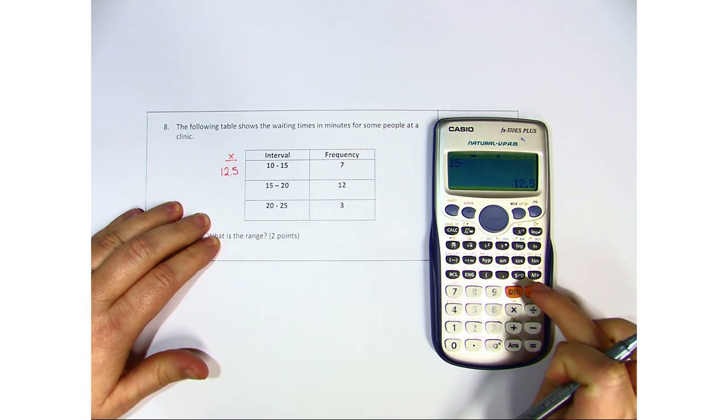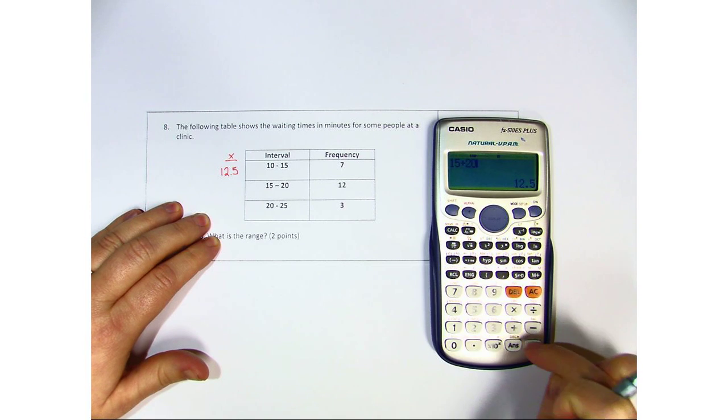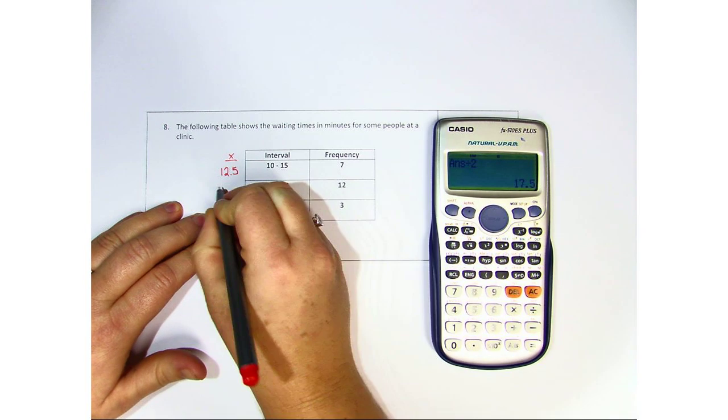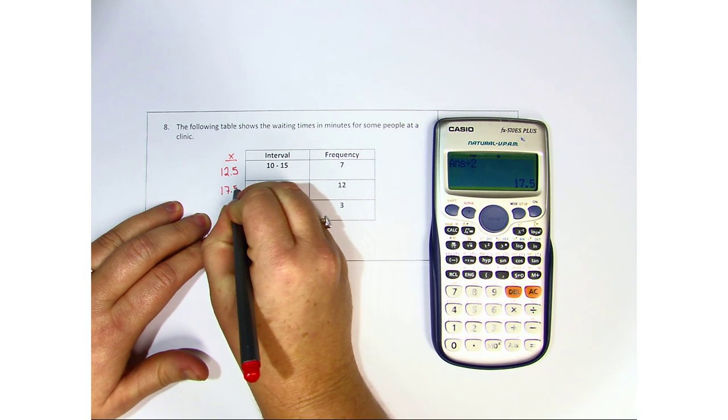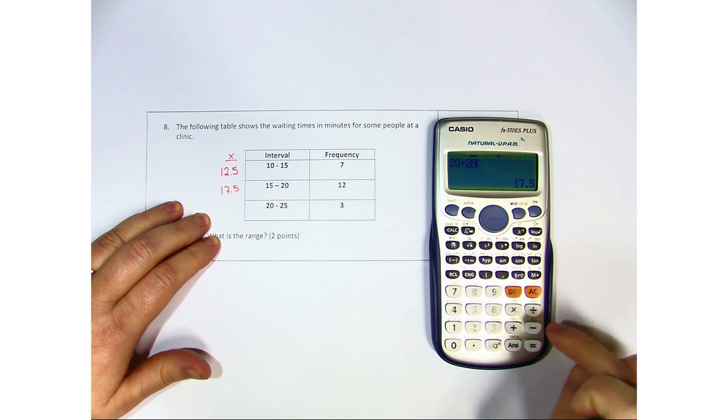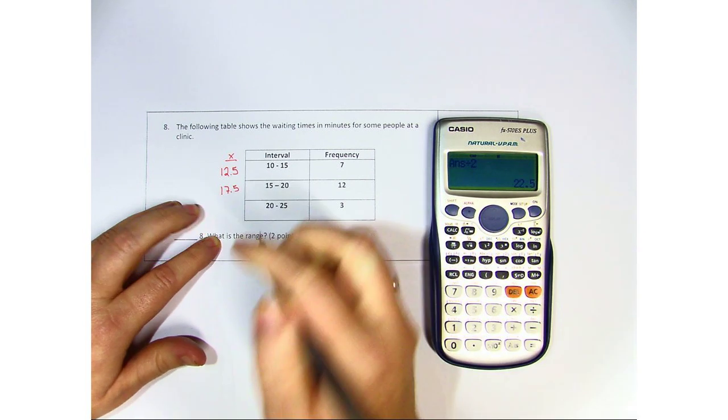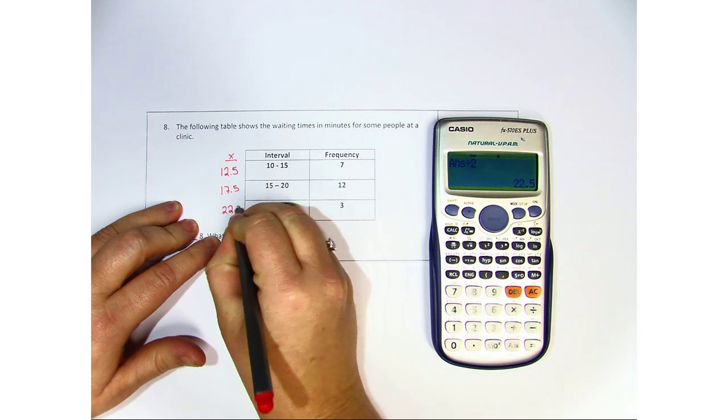Next, 15 plus 20 divided by 2 is 17.5. And lastly, 20 plus 25 divided by 2 is 22.5.